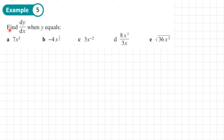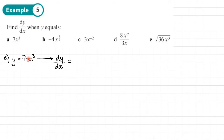Example 5: find dy dx. Same process, just different notation. Part a: y equals 7x cubed. dy dx — there's already a 7, so multiply 7 by the power 3 to get 21. So dy dx equals 21x squared.